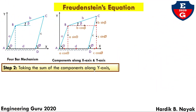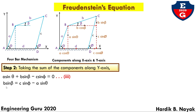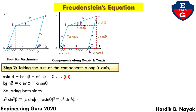Taking the sum of the components along the Y-axis: A sin theta plus B sin beta minus C sin phi equals zero. So B sin beta equals C sin phi minus A sin theta. Squaring both sides: B squared sin squared beta equals C squared sin squared phi plus A squared sin squared theta minus 2AC sin phi sin theta. This is equation number 4.